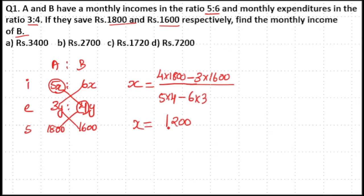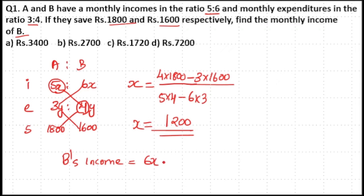So your x value is equal to 1200. That means B's income is 6x, which equals 6 into 1200, which equals 7200. So your answer is option D.